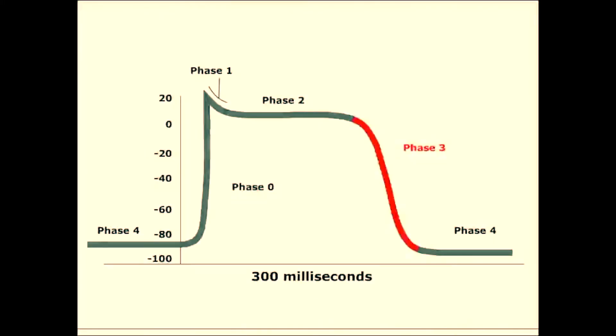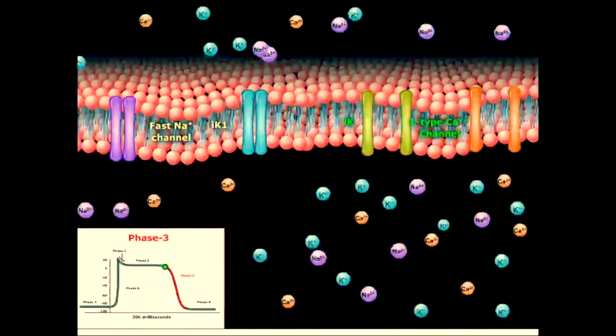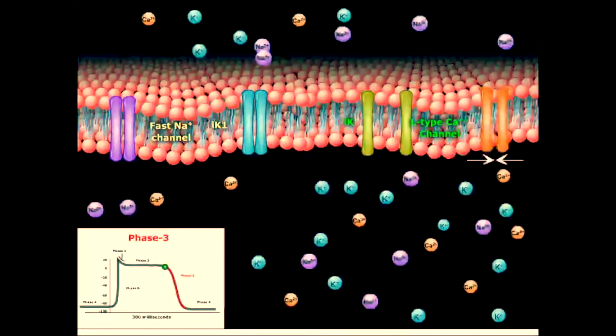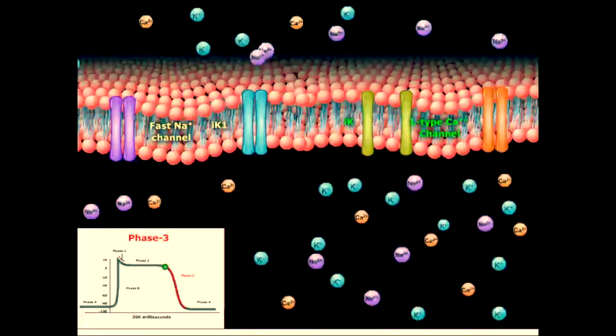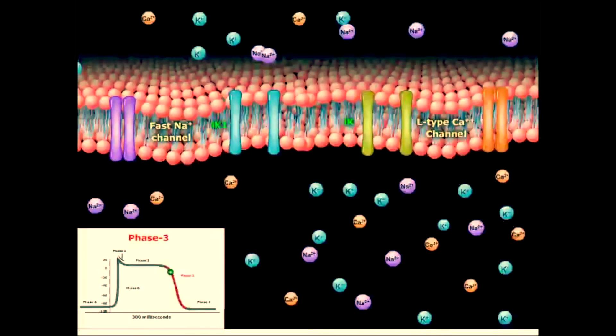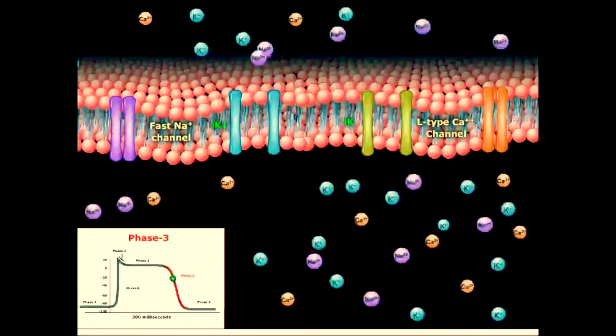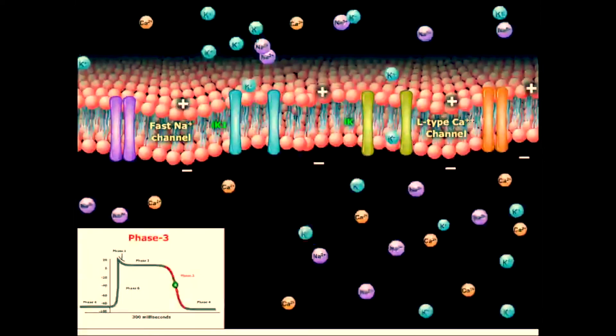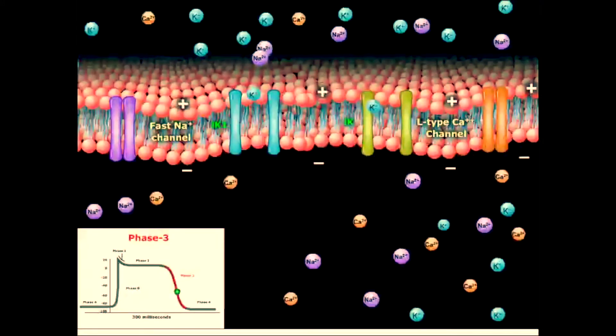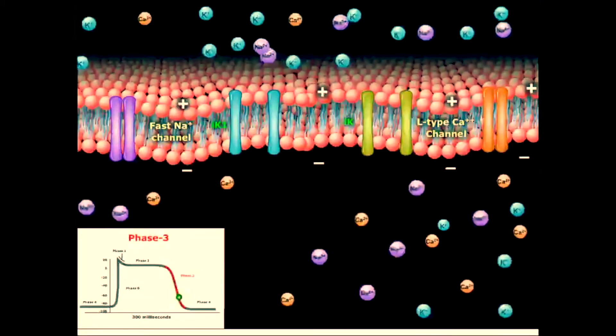Phase 3 is the repolarization of the action potential. During phase 3, the L-type calcium channels close, while the slow delayed rectifying potassium channels remain open. Meanwhile, the opening of more inwardly rectifying potassium channels, IK1, allows efflux of potassium, which leads to a negative change in membrane potential. This net outwardly positive current causes the cell to repolarize.